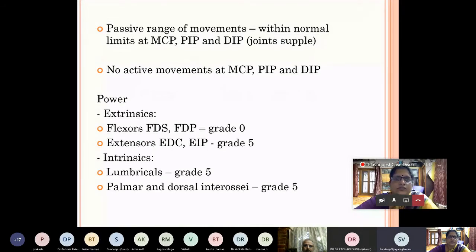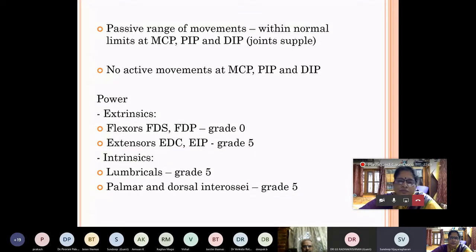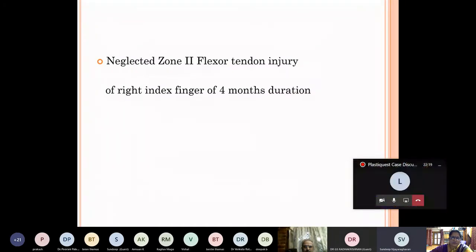And on examination, the passive range of movements, all the joints are supple. The passive movements at the MCP, PIP and DIP are within normal limits. No active movements was possible at the MCP, PIP or DIP. On assessing the power of the extrinsic flexors, FDS and FDP of the right index finger grade 0. The extension was grade 5. The lumbricals were grade 5 and the interossei were grade 5. I have come to a diagnosis of a neglected zone 2 flexor tendon injury of the right index finger of 4 months duration.